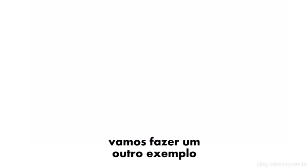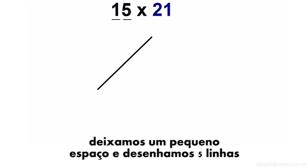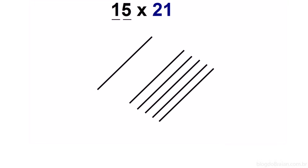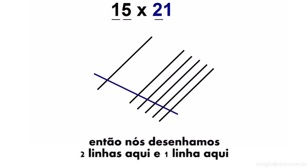We'll do another example. For 15 by 21, we start out by drawing one line. Then we'll leave a little bit of space and draw five lines. And the other number, we draw lines in the other direction. So we draw two lines here and one line here.